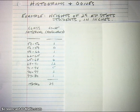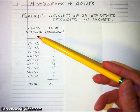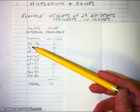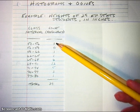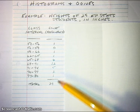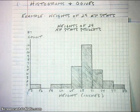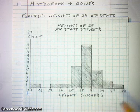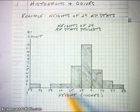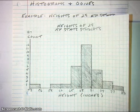In a previous video, we constructed a histogram from the heights of 29 AP statistics students. We started with a frequency table where we broke up the data into class intervals from 53 to 56 inches, etc., and counted how many individuals were in each interval. The histogram had a horizontal axis running from 53 to 80 inches, broken up into 3-inch class intervals, with counts on the vertical axis.